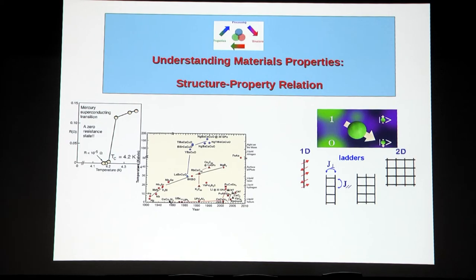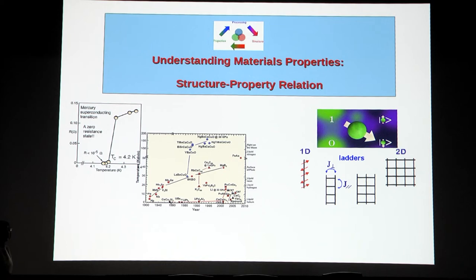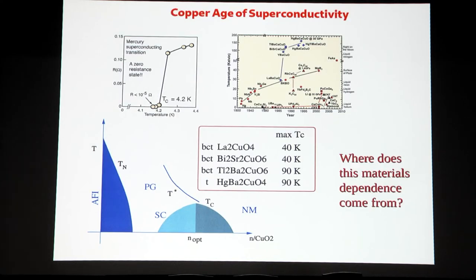I will tell you about three categories of problems addressable with computational tools. The first category is not designing but understanding — understanding material properties, namely the structure-property relationship. The example I will show is drawn from superconductivity.